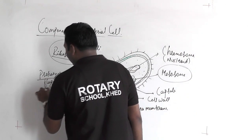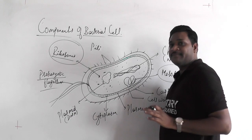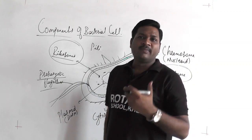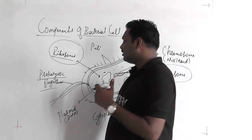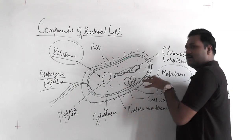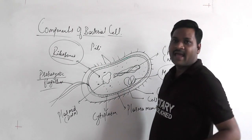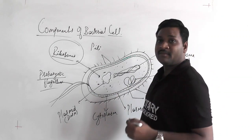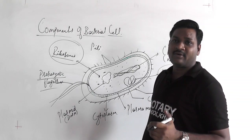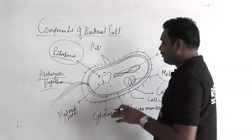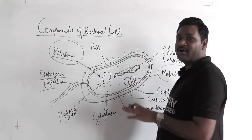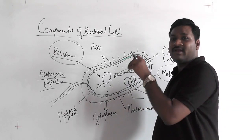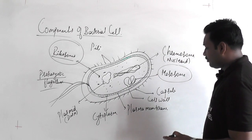The prokaryotic flagellum is the most important part of the bacterial cell, as flagella are responsible for movement. Most bacteria show amoeboid movement — which is cytoplasmic streaming — but locomotion from one place to another is through the flagellum. The flagellum structure consists of basically three parts: the basal body, hook, and the membranous part. The prokaryotic flagellum consists of certain protein subunits that help in filamentous-type movement.